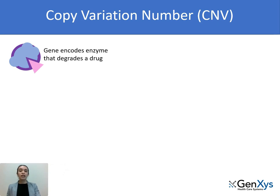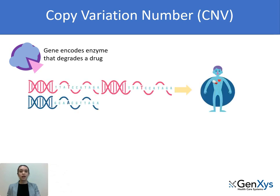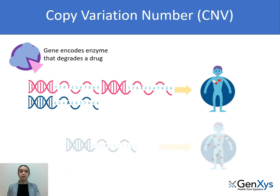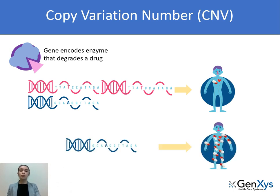For example, let's think of a gene that encodes an enzyme that breaks down a specific drug. In a patient with a higher number of copies, there will be much more enzyme than normal, and the drug will be broken down or degraded faster. This means it will be unable to have a therapeutic effect. On the other hand, patients with a single copy will be unable to degrade this drug at a normal rate. This will result in the accumulation of this drug in their body, increasing the probability of an adverse drug event.